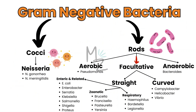Facultative rods are further subdivided into curved — which includes Campylobacter, Helicobacter and Vibrio cholerae, the topic of today's video — and also into straight ones. Straight ones include respiratory organisms like Haemophilus, Bordetella and Legionella; zoonotic ones like Brucella, Francisella, Pasteurella and Yersinia; and enteric and related organisms, which include E. coli, Enterobacter, Serratia, Klebsiella, Salmonella, Shigella and Proteus.